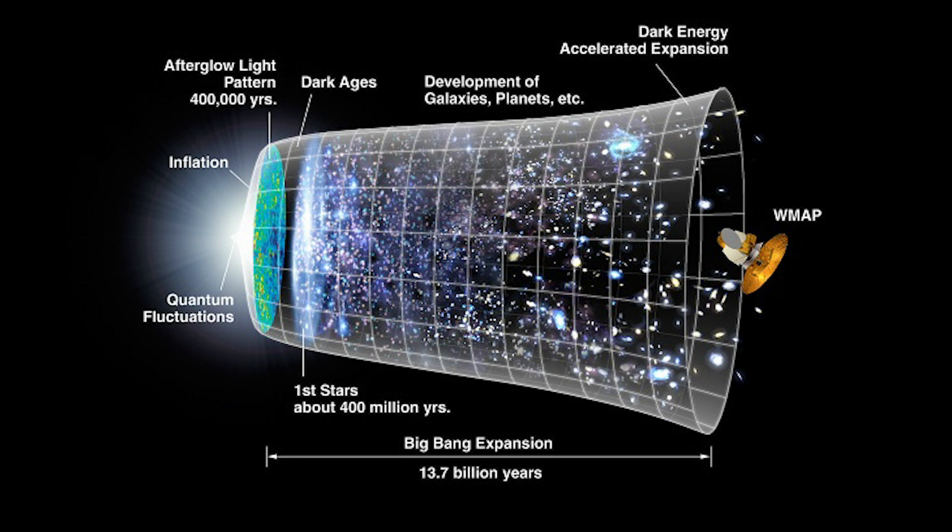Schematically, this diagram traces the 13.7 to 15 billion years plus a trillionth of a second history of the universe from the quantum scale to the formation of stars, galaxies, planets, and WMAP.